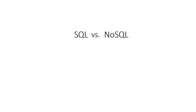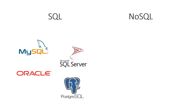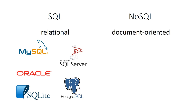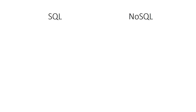Let us first see what the differences between SQL and NoSQL databases are. SQL databases like MySQL, SQL Server, Oracle, PostgreSQL, or SQLite have existed for many years. They are also called relational databases. NoSQL databases are relatively new. There are different subtypes, but in this video we will talk about the most popular type, document-oriented databases like MongoDB, CouchDB, or DynamoDB.